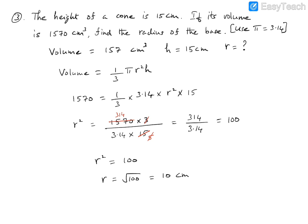The radius r is 10 centimeters. When given the volume and height and asked to find the radius, just write the formula, substitute all known values, keep the unknown as it is, rearrange to bring the unknown to one side, and solve.